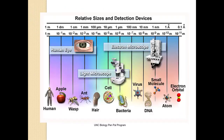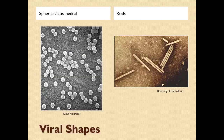They're incredibly small. Bacteria is actually larger than viral organisms, and the electron microscope is really the only way you would be able to see them.